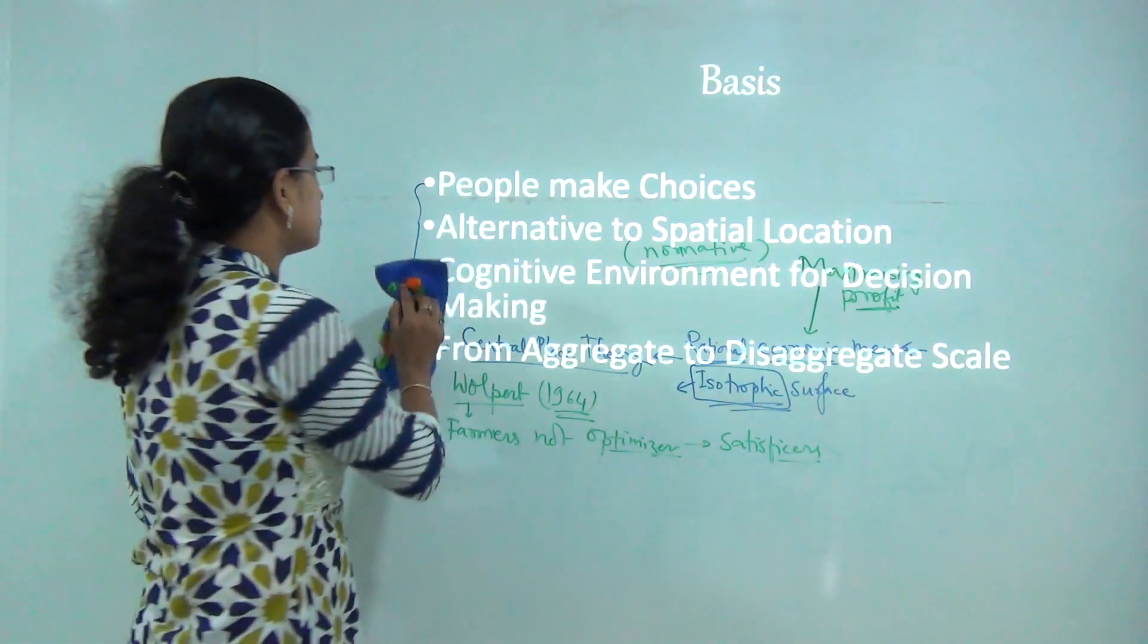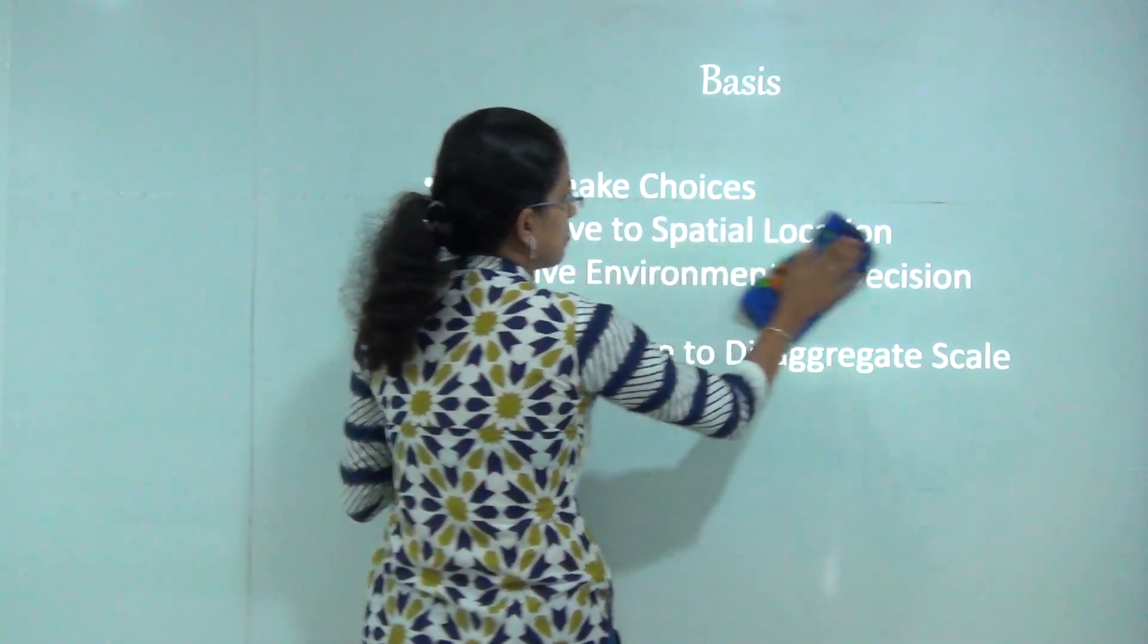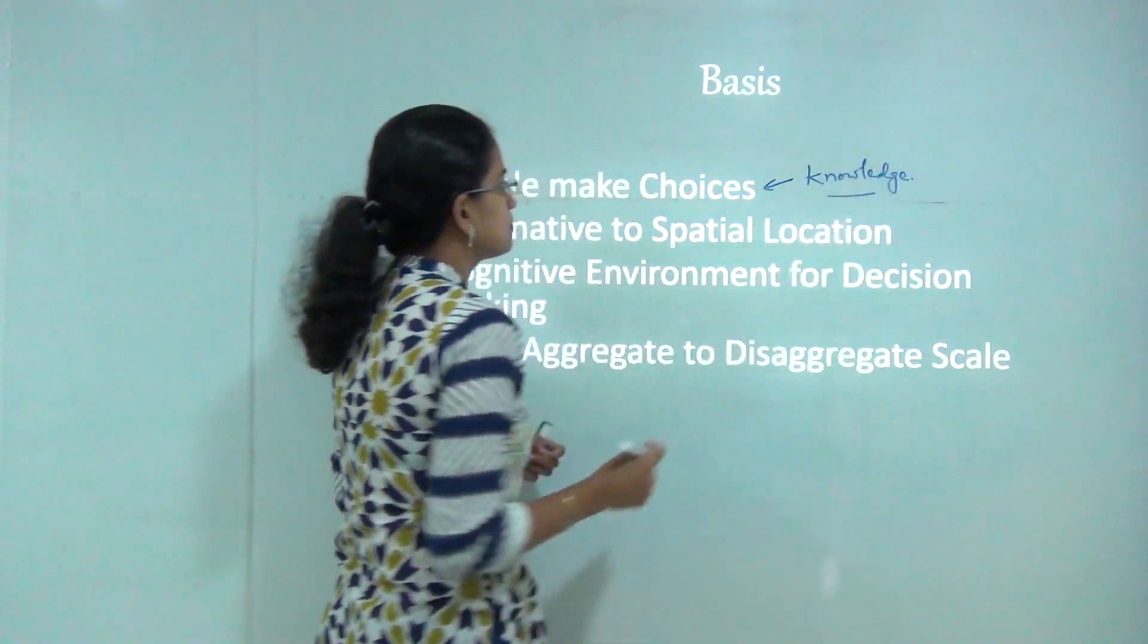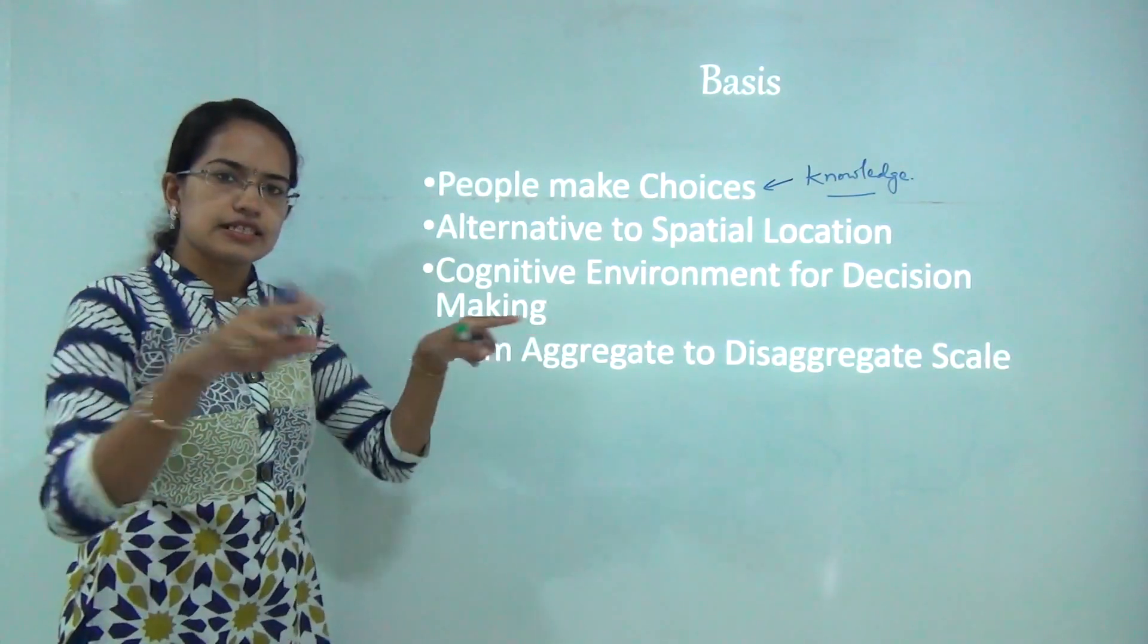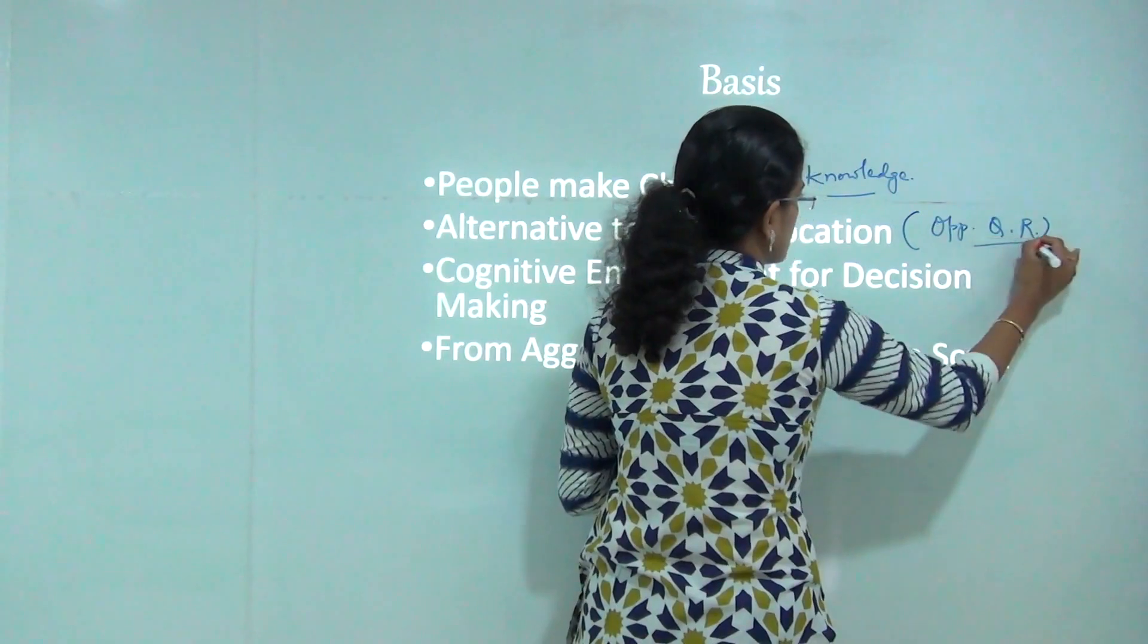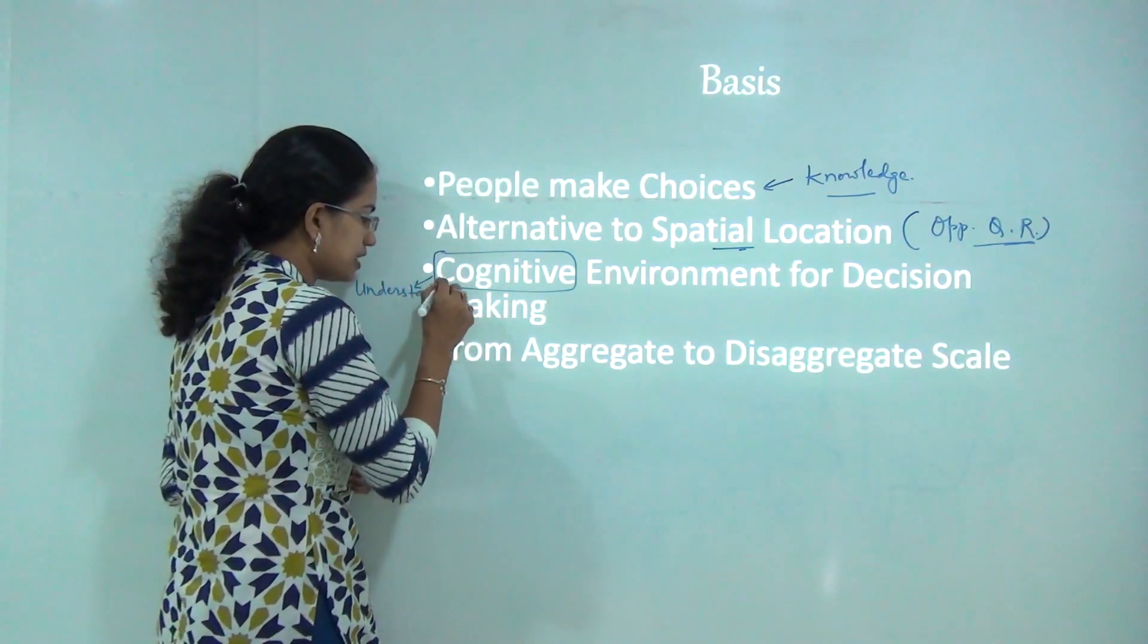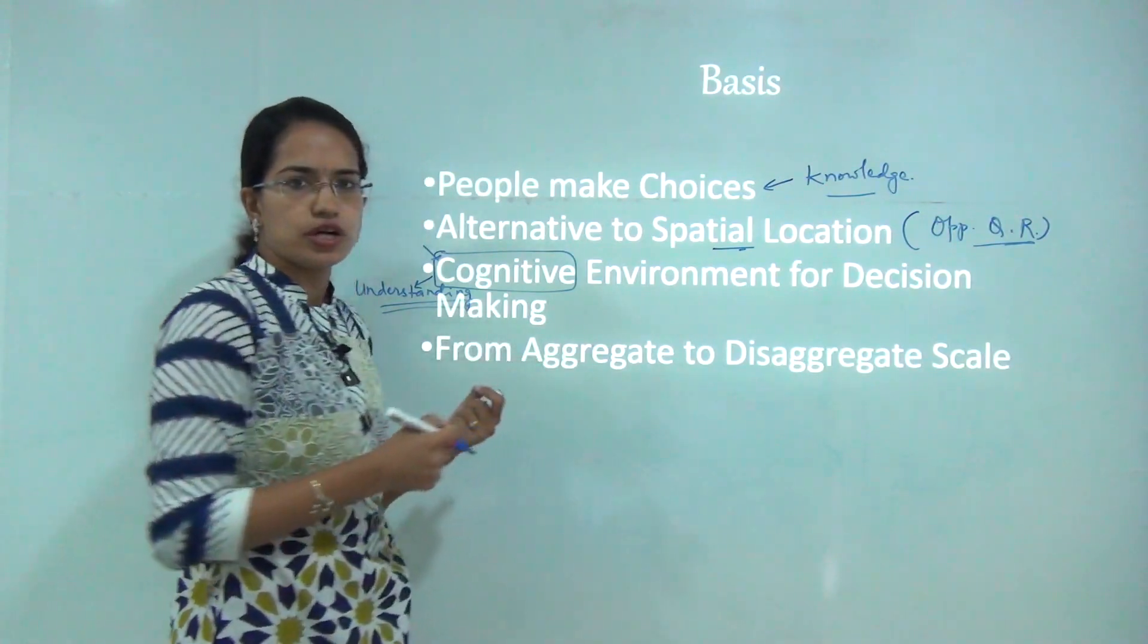What forms the basis of behavioral approach? When I say behavioral approach, it talks about behavior of an individual, meaning the person has the freedom to make choice and that choice is governed by the predetermined knowledge that the person has. This was developed as an alternative to spatial location and focused on the cognitive element, meaning understanding and cognitive decision making.